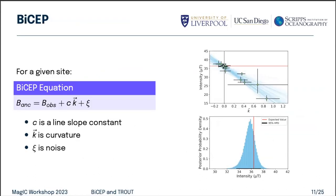When you get the estimate, you look at the intercept — the zero crossing point — the correction back to zero curvature. All of these lines are different fits to this equation using a Bayesian method, giving you the uncertainty. This is the posterior distribution, or samples from the posterior distribution, of those zero crossings. You get something centered right around the actual value — an answer of about 34 to 37 point something.